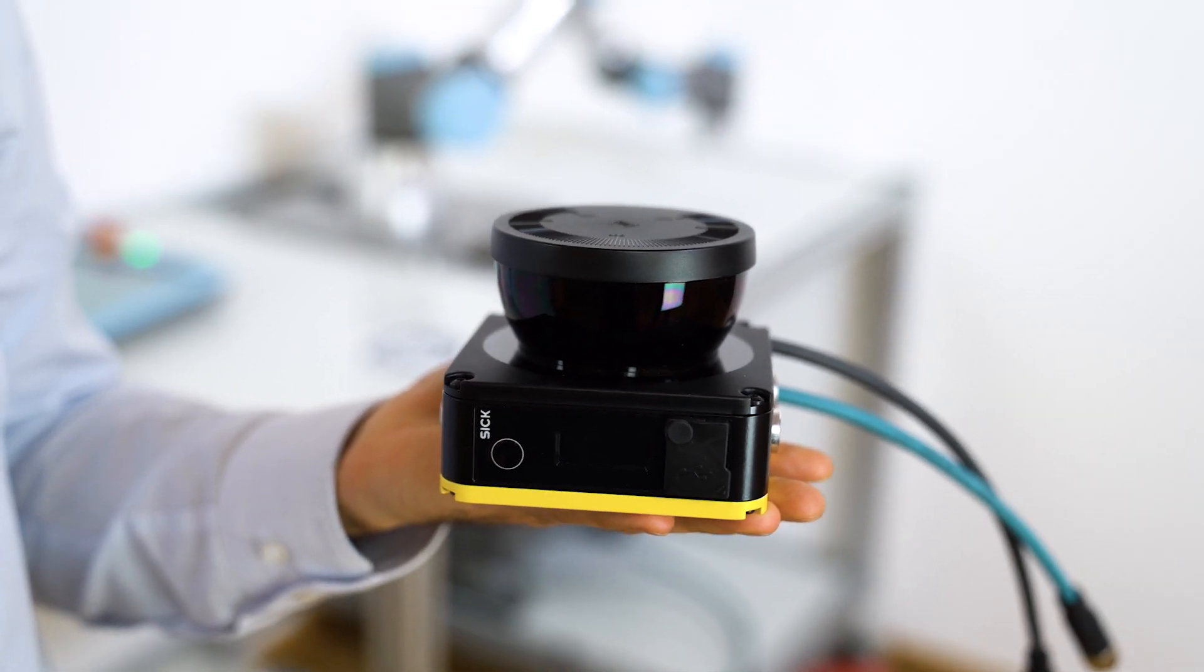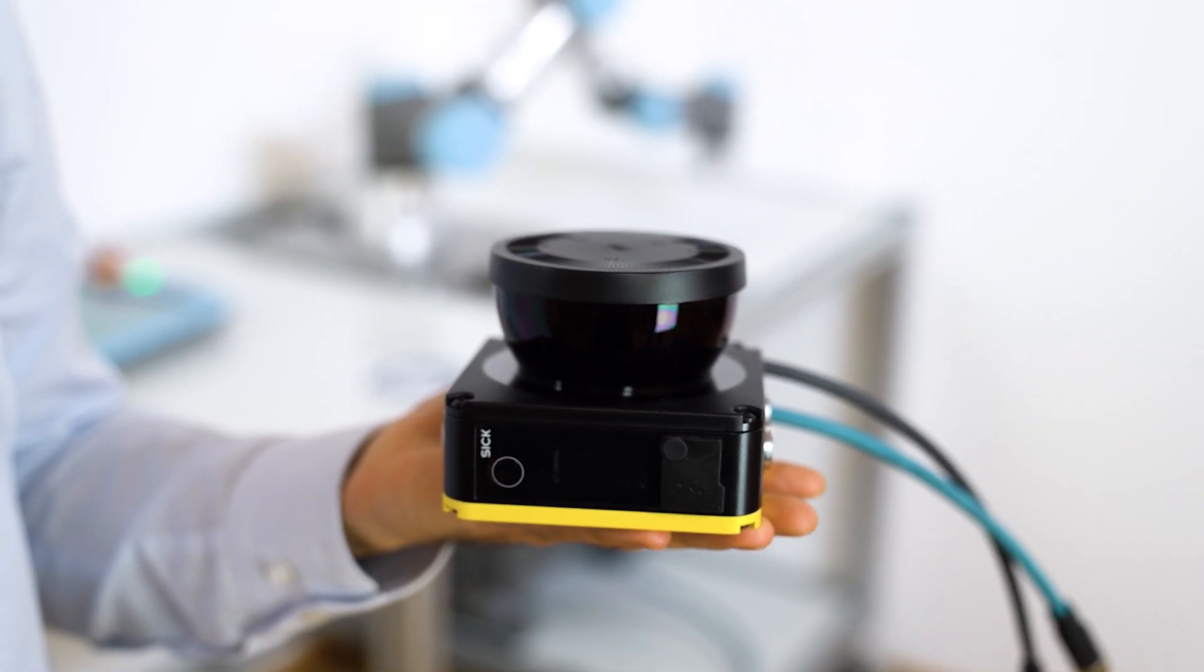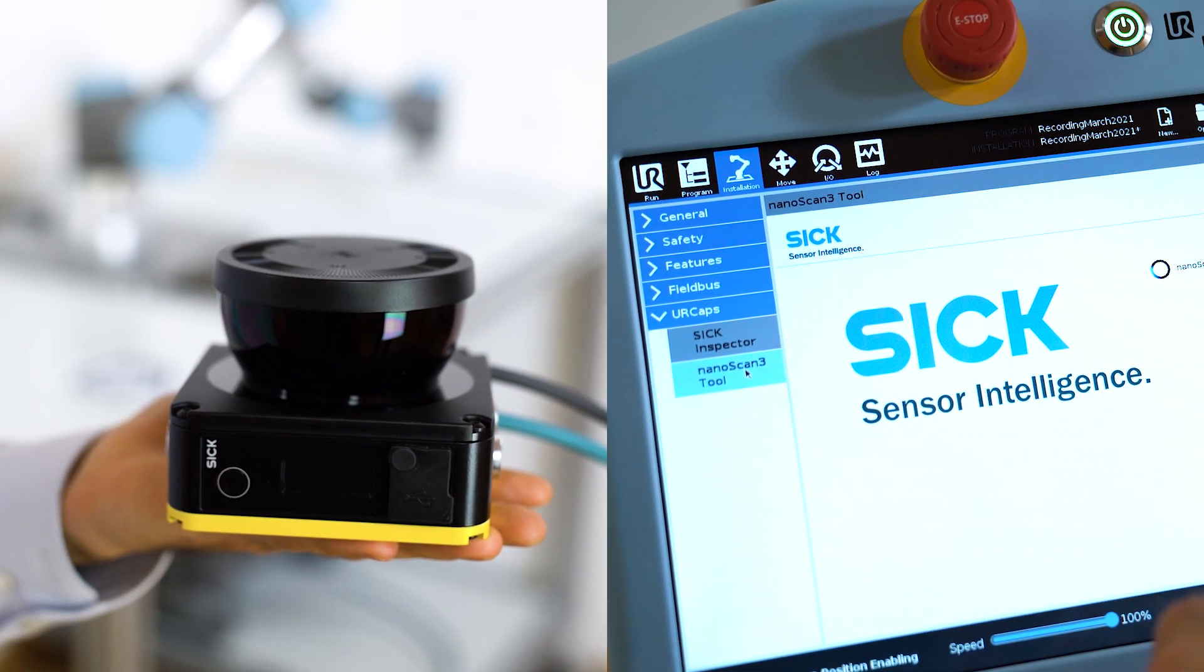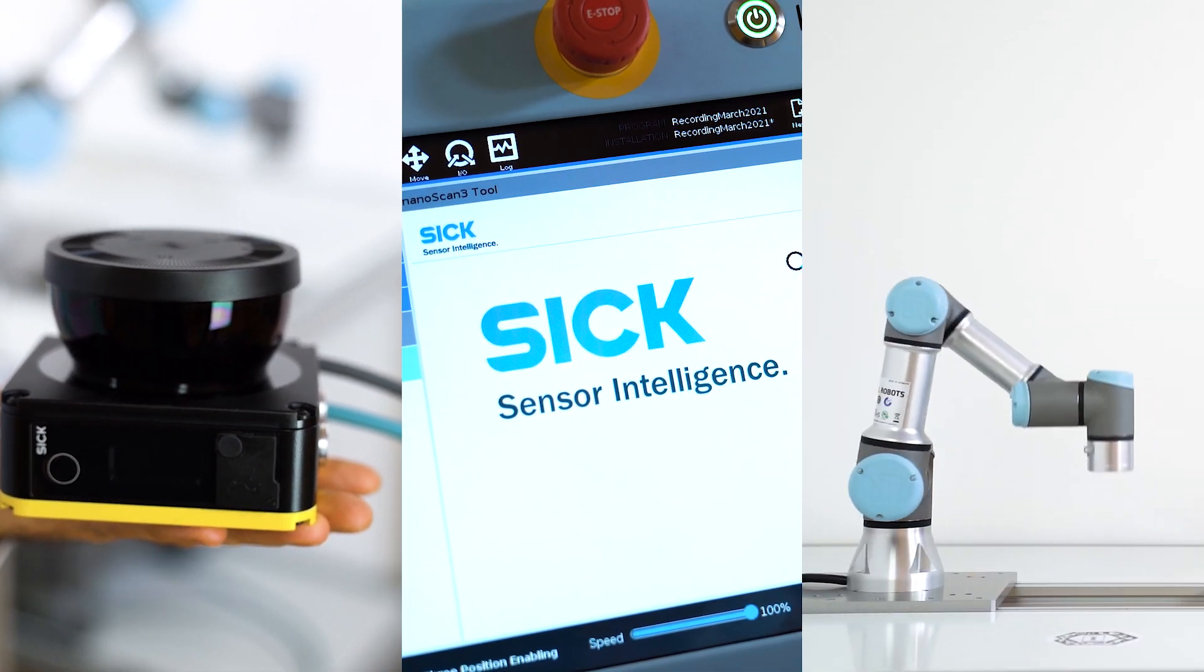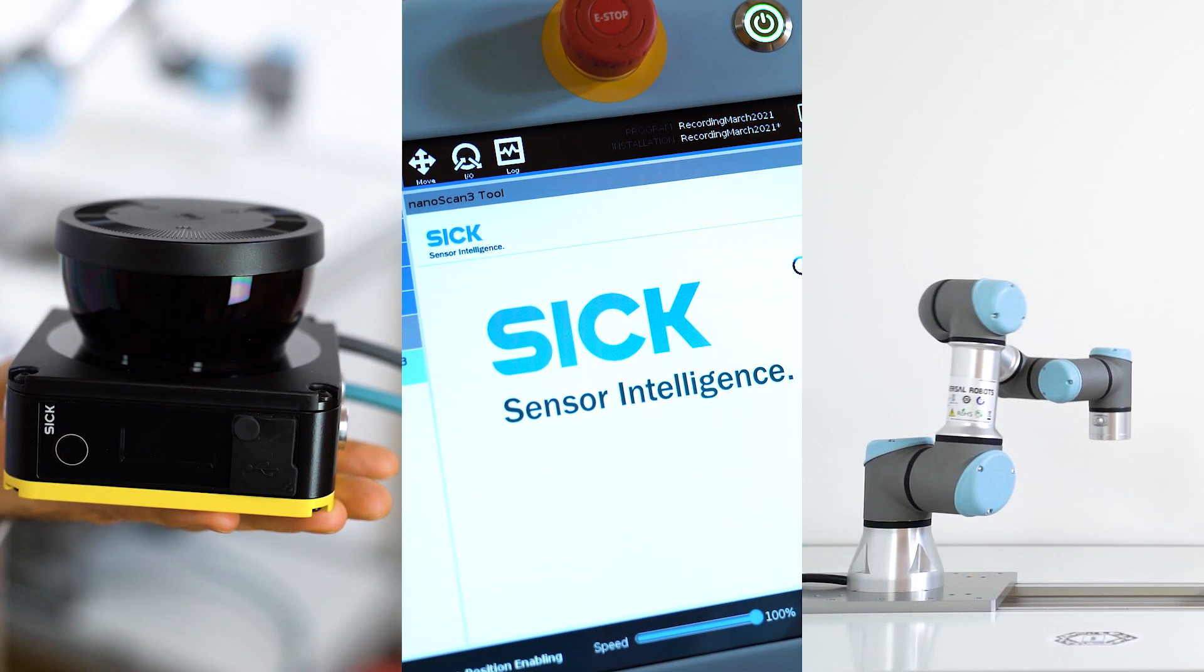They are a smart combination of our smallest PLD safety laser scanner, the NanoScan3, a software configuration tool, and the UR Robot's inherent safety features.